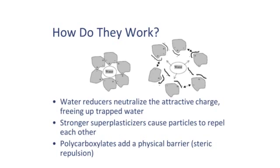The different strengths of water reducers have different degrees of effectiveness. I'm going to mention low range, mid range, higher range, and whatnot. And the stronger the water reducer, the more it helps break these clumps up. The strongest of the superplasticizers — the strongest of the water reducers — are called polycarboxylate.